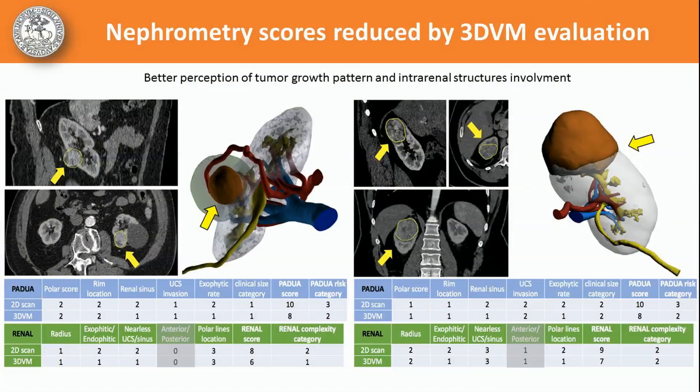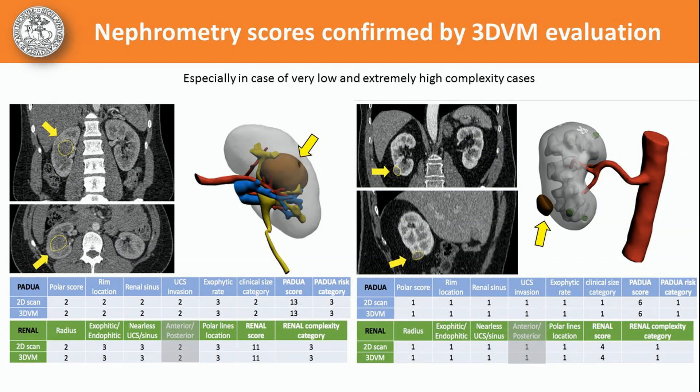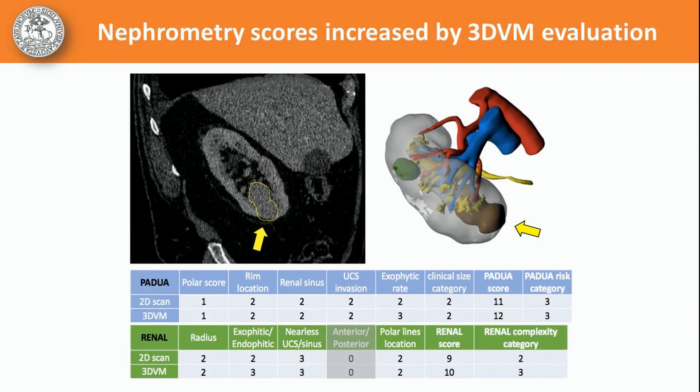In these cases, the 3D virtual models downgraded the nephrometry scores. Here, on the contrary, the nephrometry scores have been maintained. This is instead the only case in which the nephrometry score was increased by 3D evaluation.